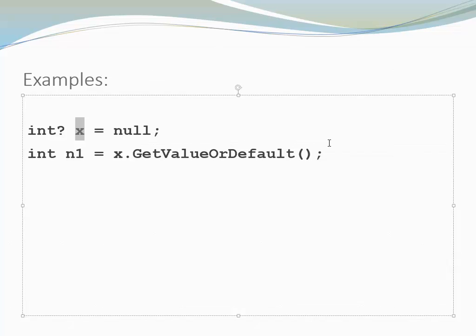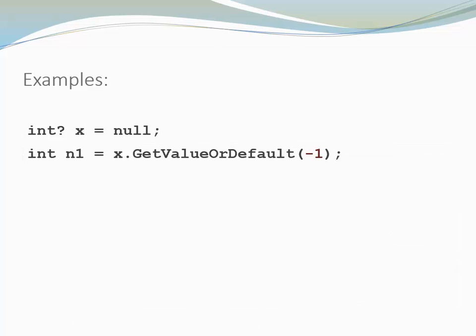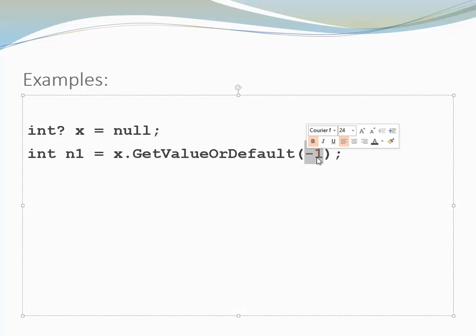Fortunately, I have the possibility to specify my own default value. I can pass minus 1 as an argument to GetValueOrDefault. And now my method is going to check whether x is null. If that is the case, minus 1 is going to be returned. Otherwise, the value of x is going to be returned.